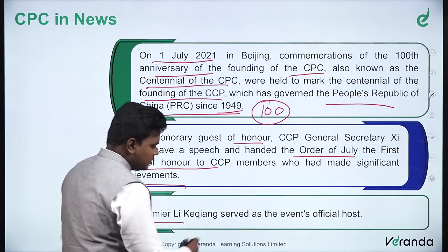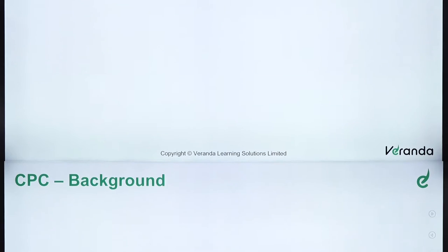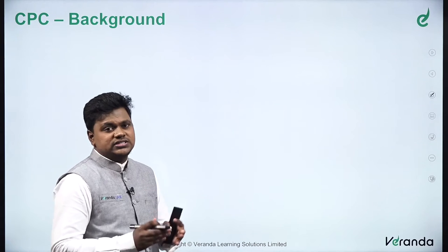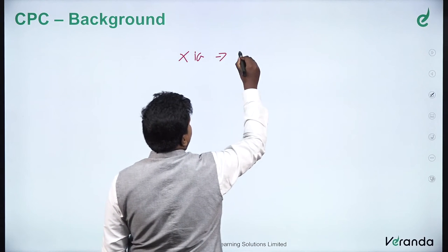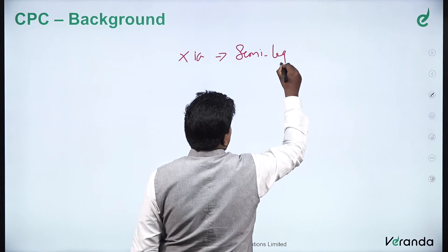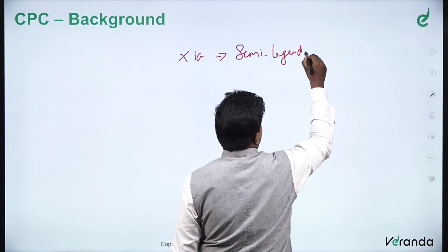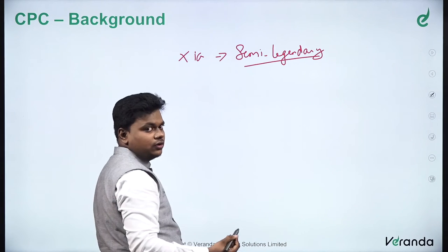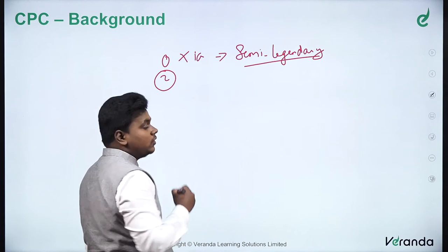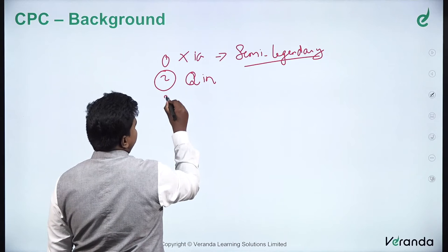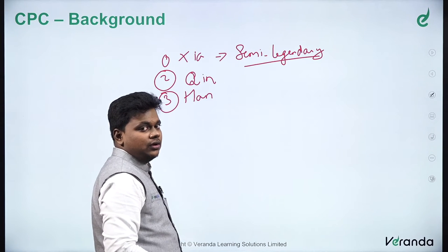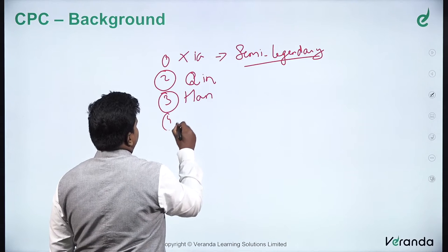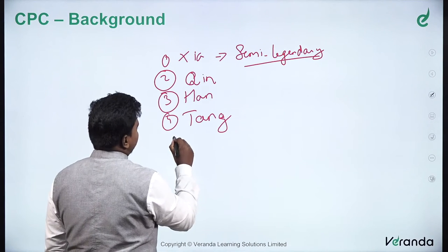Premier Li Keqiang served as the official host of the event. Regarding the background of the CPC, China has a long history and is one of the earliest civilizations in the world. We have the Xia dynasty, which is a semi-legendary dynasty — not all facts about it are verifiable due to limited records. It was followed by the Qin dynasty, then the Han dynasty, during which significant scientific progress was made and China became a great nation. It was again followed by the Tang dynasty, and finally the Qing dynasty.